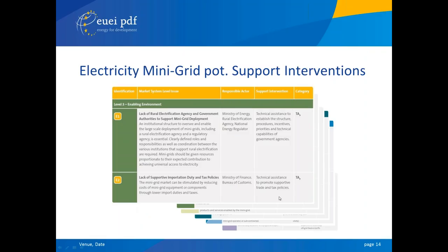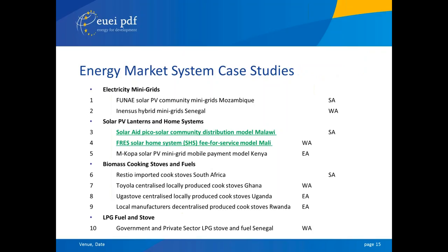On the basis of this, the slide illustrates — essentially screenshots from the booklet — quite a long list of issues that need to be in place. We try to describe how the interventions could look, who the responsible actors are in the lead, and the color coding corresponds with the type of level identified in the market map. It would be too much for this presentation to go into great detail; I just want to describe how the model works and you're welcome to explore it for yourself. We then had a number of case studies from the mini-grid realm, solar PV lanterns, biomass cooking stoves, LPG fuels, and so on.